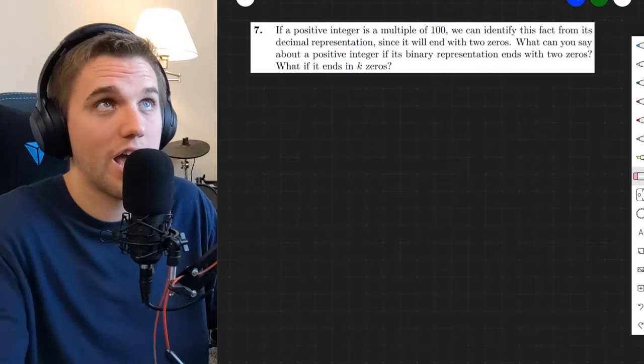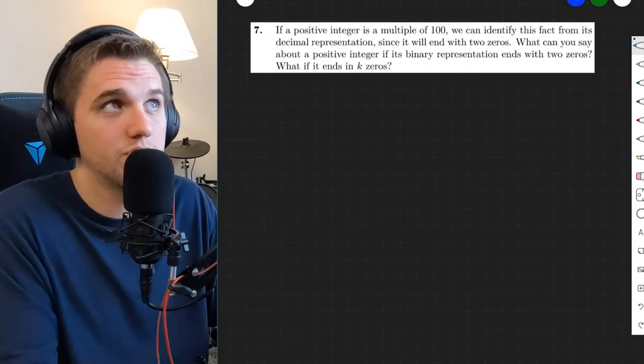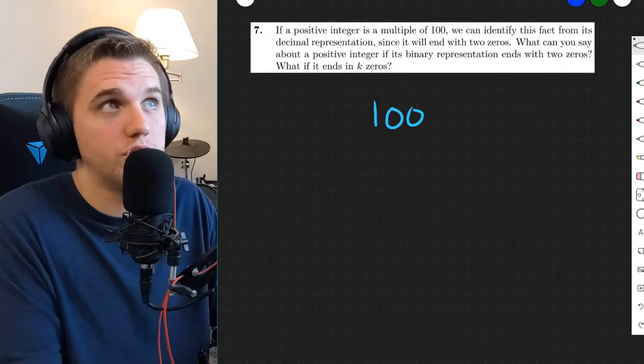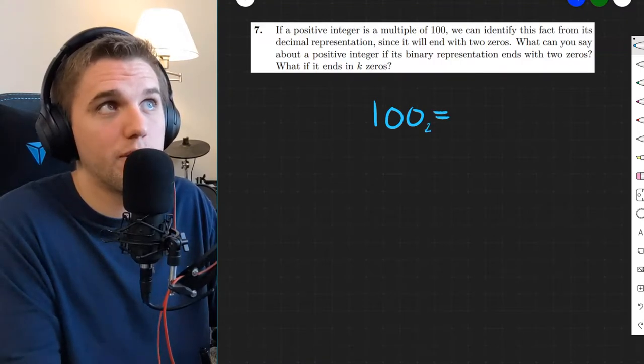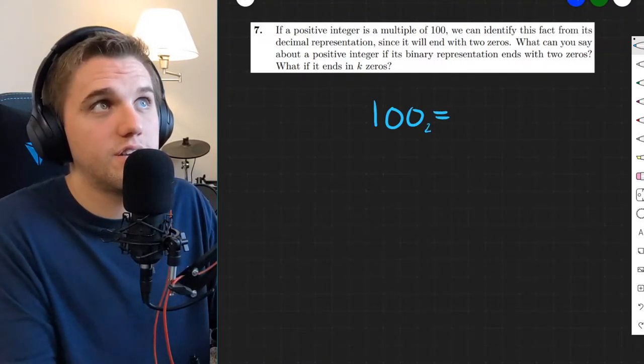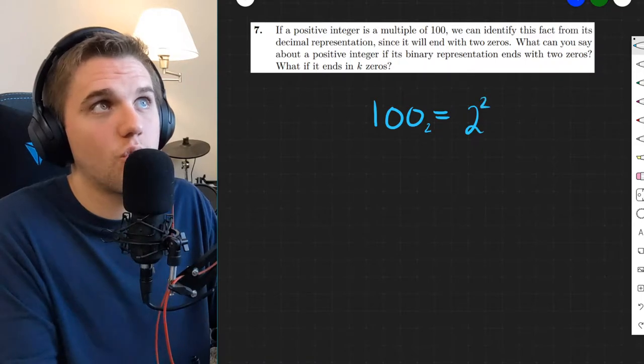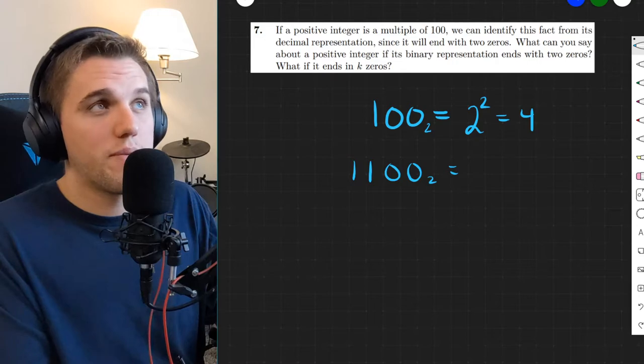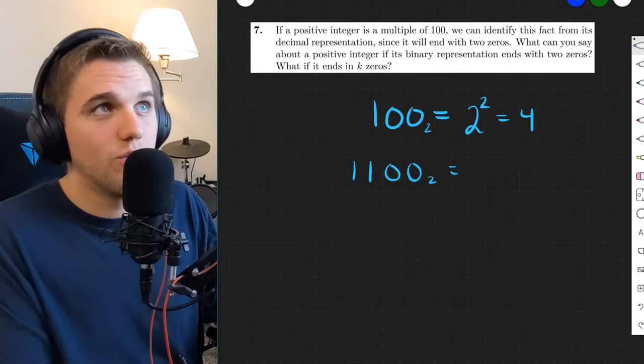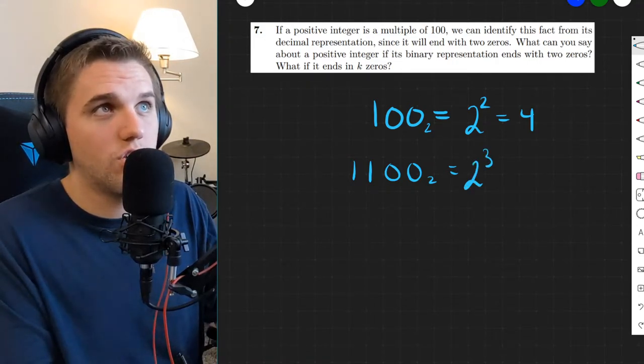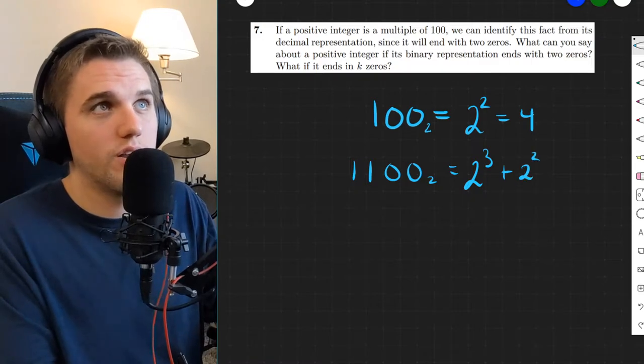Well, let's try looking at some numbers that end with two zeros. So let's try 100. This is a binary number. This is 2 squared, which is 4. What about 1100? Well, this is 2 cubed plus 2 squared, which is 12.